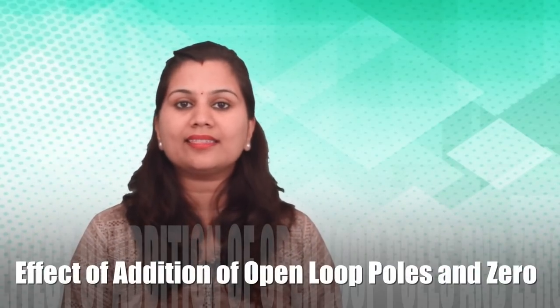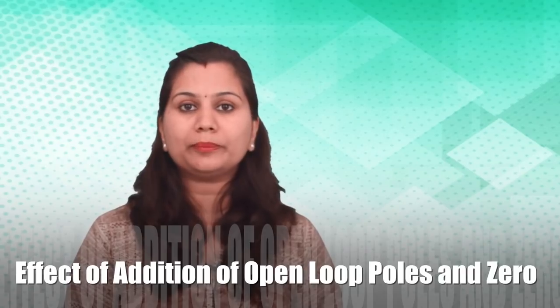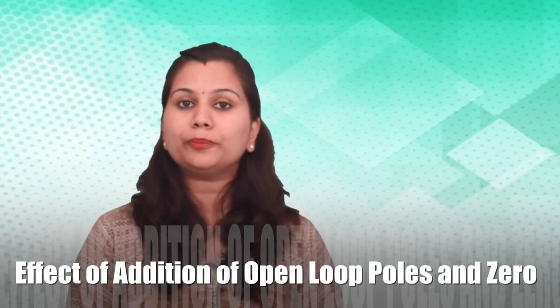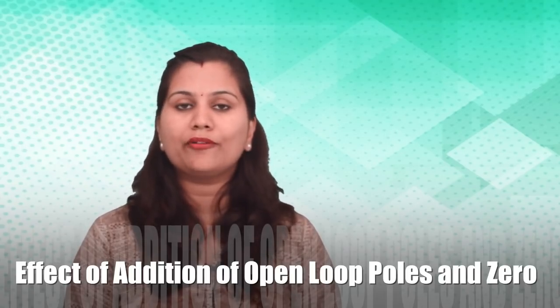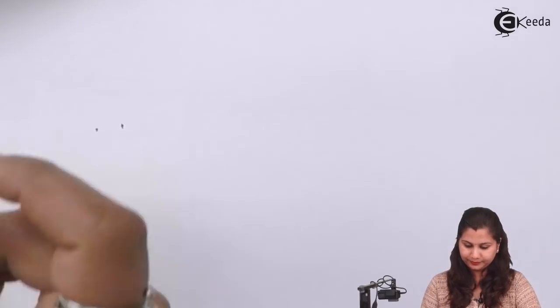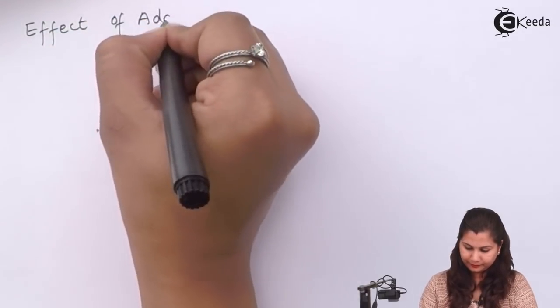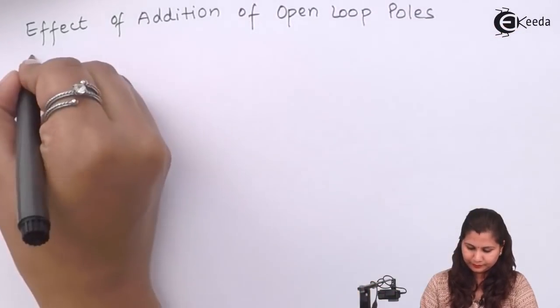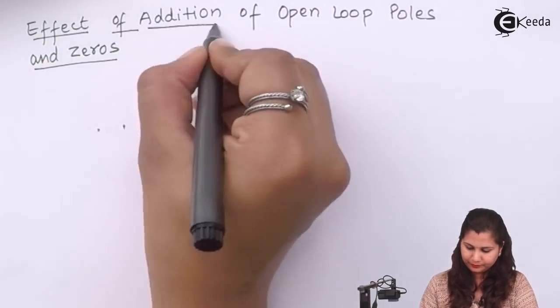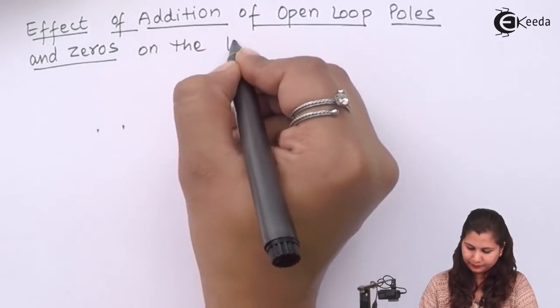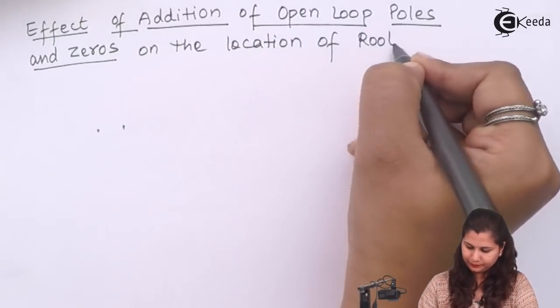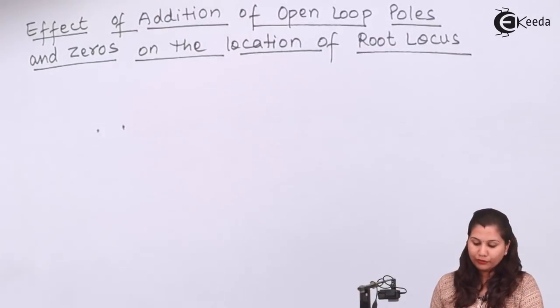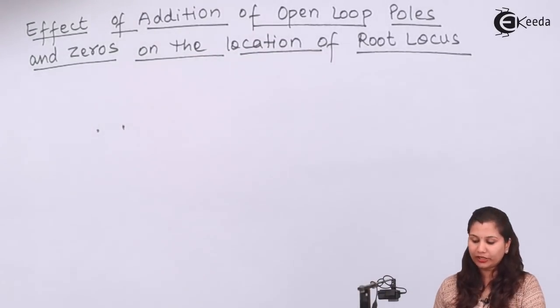Hello friends. In this video we are going to discuss what will be the effect of addition of open loop poles and zeros on the location of the root locus for a system. So let's start with the topic. First let's see what will be the effect of addition of open loop poles on the location of the root locus.